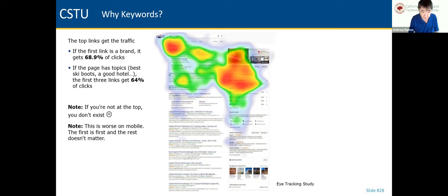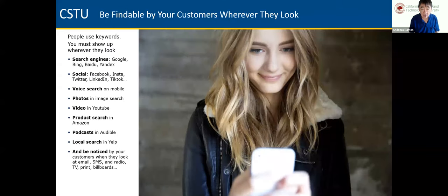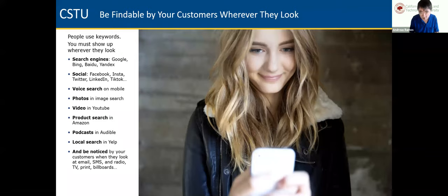On mobile devices, people simply look at the first result and click — they don't scroll down. The first click is the one that matters. Be findable by your customers wherever they look — not just in search engines, not just Google, but on Facebook, in picture search, in video, YouTube, whatever. Keywords are used across all of digital marketing, which is why we start with them.